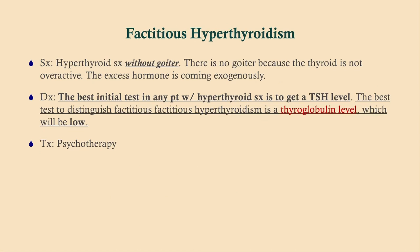Factitious hyperthyroidism is when a person is taking thyroid medication and they shouldn't be — for example, taking levothyroxine without indication. These patients may be doing it for a variety of reasons: some will get their hands on it because they want to lose weight, since thyroid hormone will make you lose weight really fast, or they may be doing it for medical attention — which is a psychiatric issue, possibly malingering or something else. You need to consider the history. Either way, work these patients up: get a TSH level, and then get a thyroglobulin level, which is going to be low in factitious hyperthyroidism. The treatment is to stop the medication and do psychotherapy.